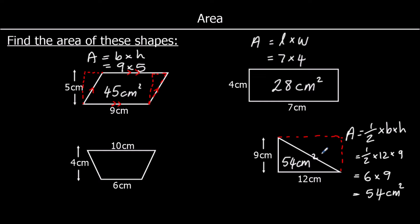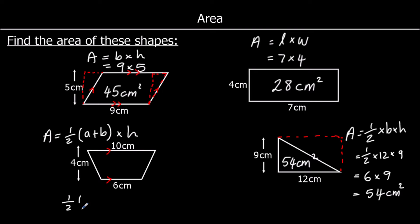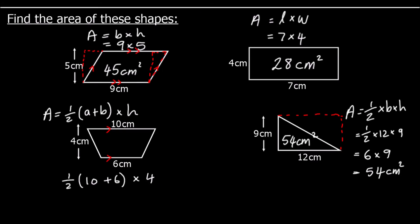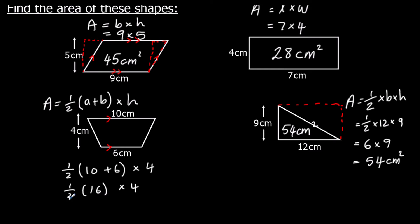The other shape is called a trapezium, and it has one set of parallel sides. To find the area of a trapezium: the area is half the sum of the parallel sides, times the height. So half of 10 plus 6, times the height of 4. Ten plus 6 is 16; half of 16 is 8; 8 times 4 is 32. So it's 32 centimetres squared.